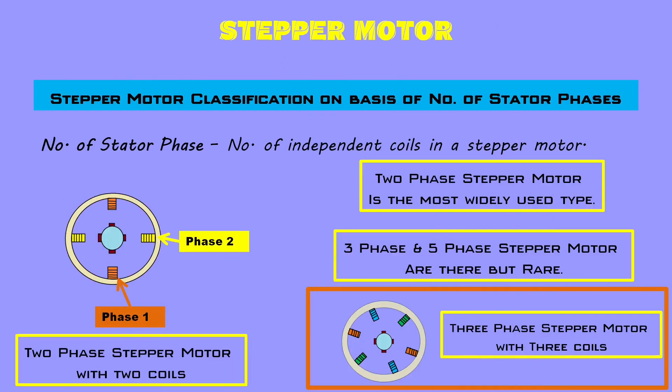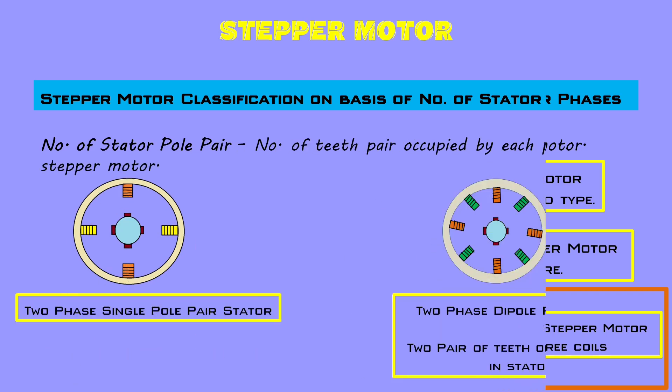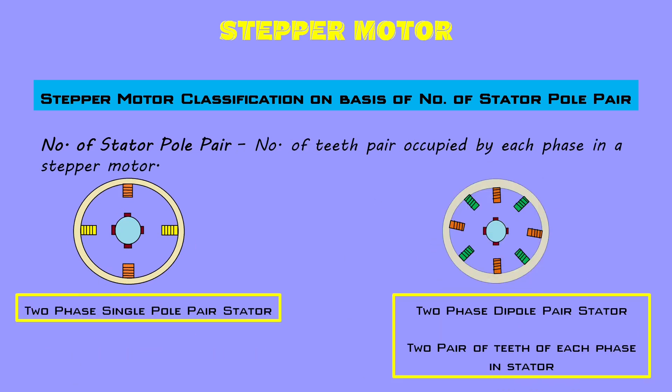Stepper motors could also be divided on the basis of number of stator phases and number of stator pole pairs. Number of stator phases is nothing but the number of independent coils present in a stepper motor. If it's a two phase stator motor, then it will have two independent coils as shown in the figure. The two phase stepper motor is the most widely used one, while three phase and five phase motors are also there but less common. The number of stator pole pairs is the number of teeth pairs occupied by each phase.